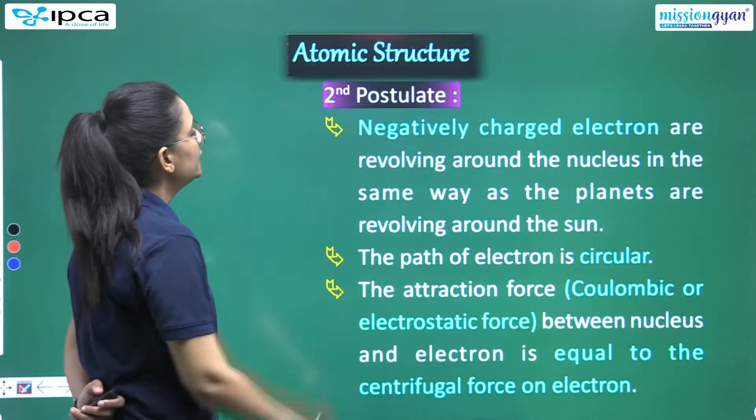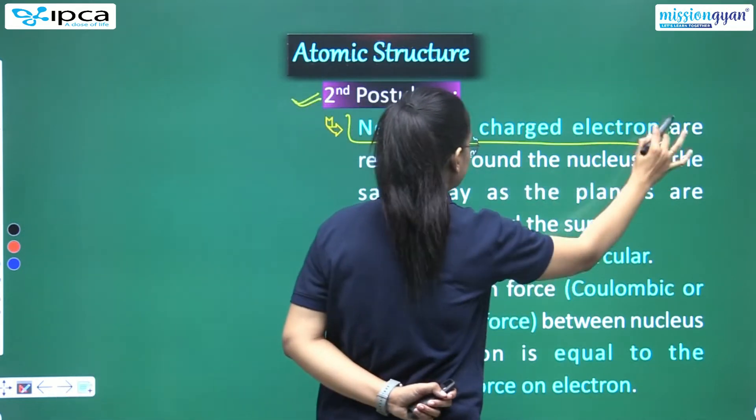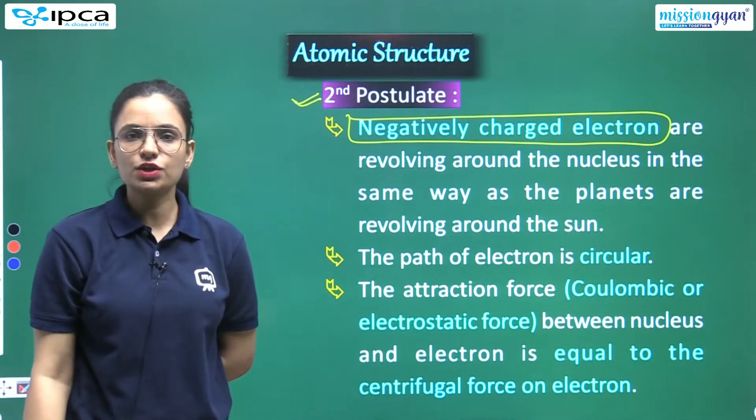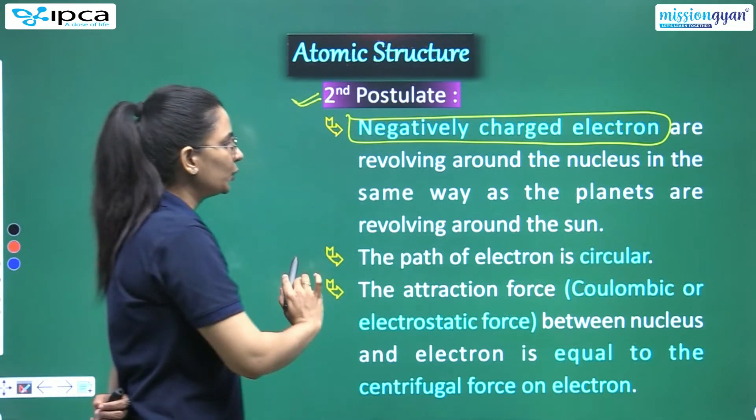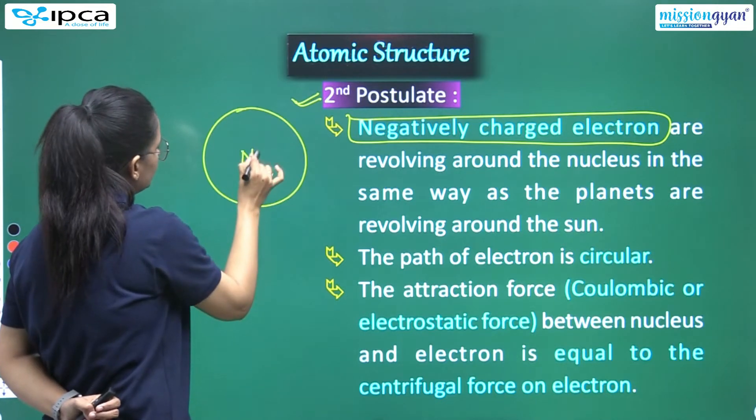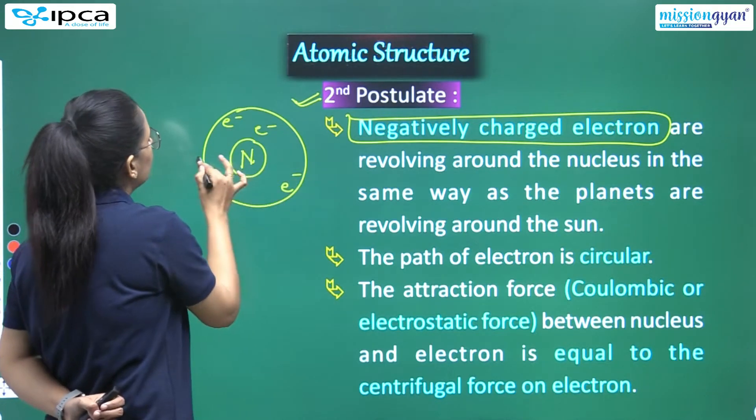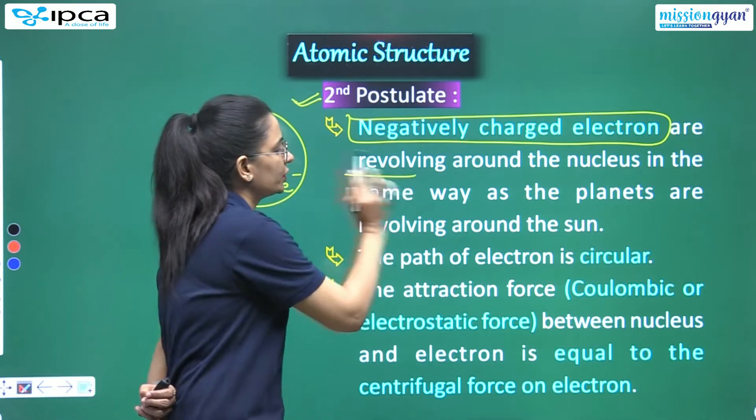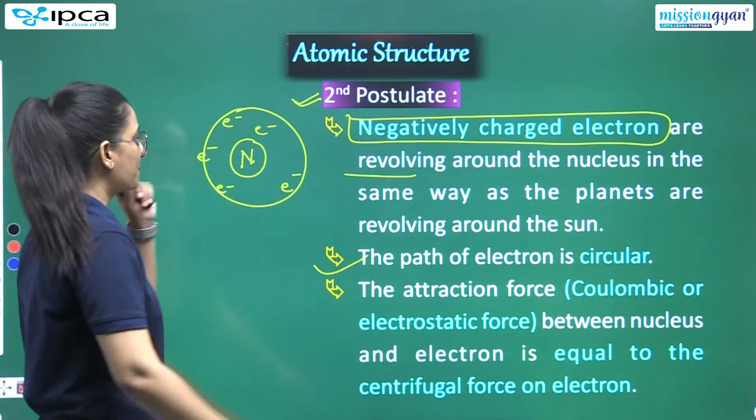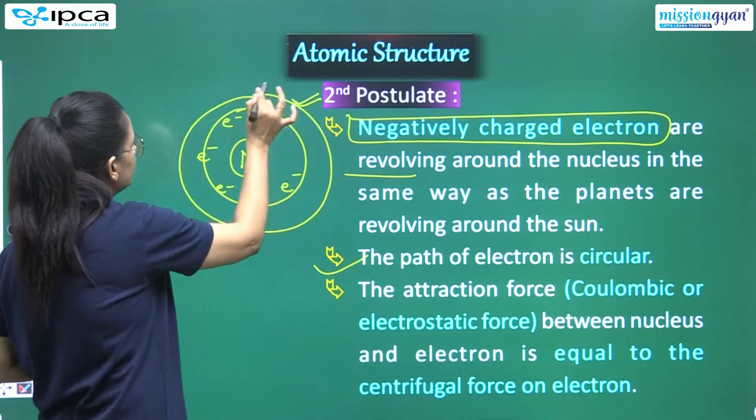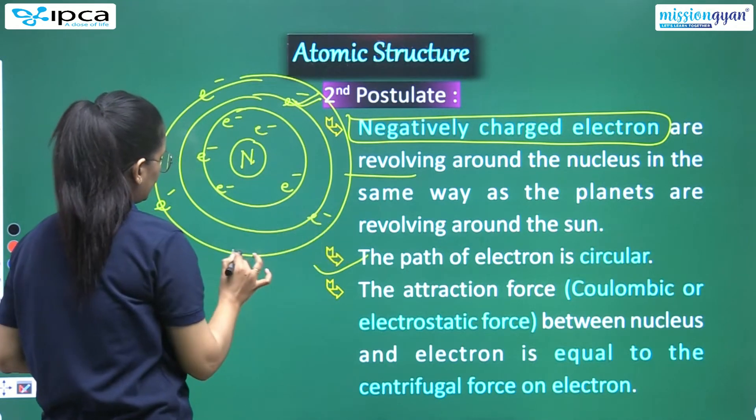What is the second postulate? The second postulate is negatively charged electrons. We always know that electrons are always negatively charged particles. They are revolving around the nucleus in the same way. Here is your nucleus in the center, in the small part. And electrons are negatively charged. These electrons revolve like the planets around the sun. The path of the electron is circular.